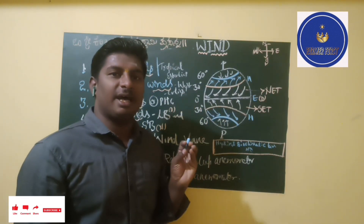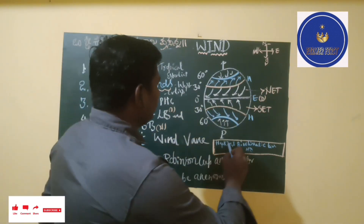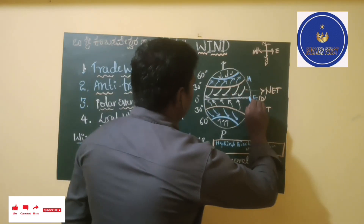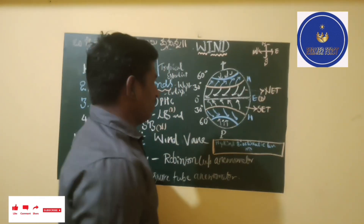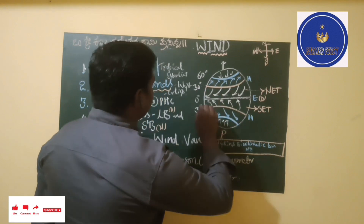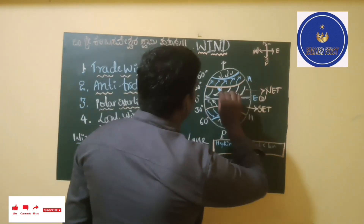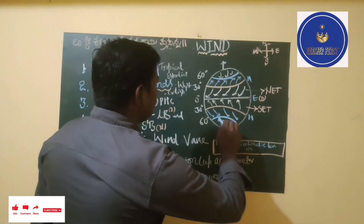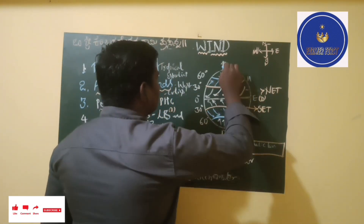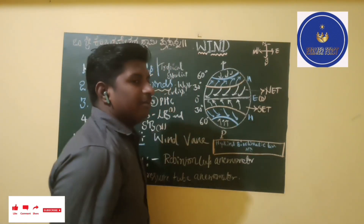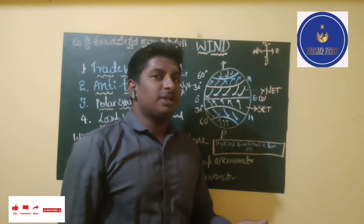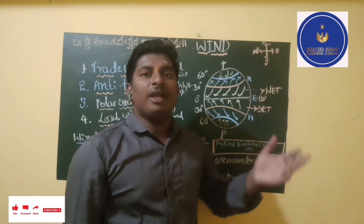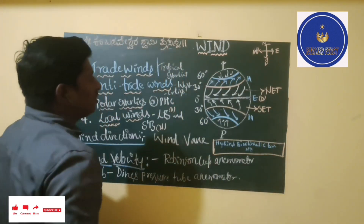If you look at this diagram, you will understand the entire wind concept. This is the Earth; this is the equator, which is a low pressure belt. The 30 degree north and 30 degree south are called horse latitudes — these are high pressure zones. The poles are also high pressure zones because there is a very low temperature there, around minus degrees, which is why the pressure is more.